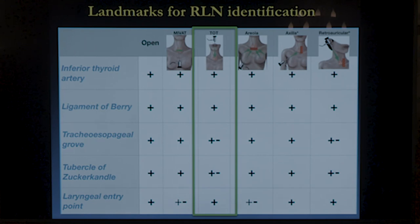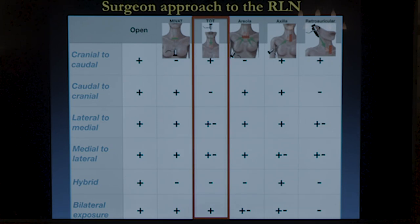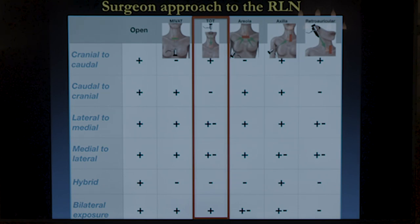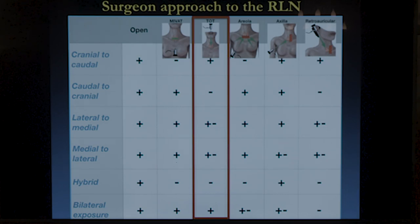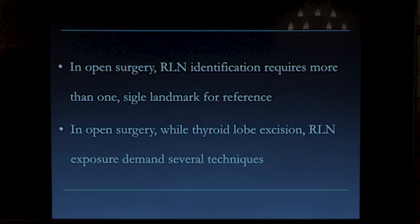It's not only about landmarks. The approach and dissection of the nerve is also different. In open surgery, we always do a hybrid approach, dissecting the nerve caudal to cranial or cranial to caudal, while in the endoscopic transoral approach it can only be cranial to caudal. So there is a limitation of surgical approach and identification of the recurrent nerve. For surgeons not using monitoring, I think it's important to use it because the landmarks and dissection modes are fewer than in open procedure.